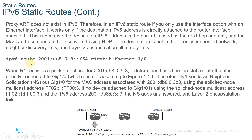Proxy ARP does not exist in IPv6. Therefore, in an IPv6 static route, if you only use the interface option with an Ethernet interface, it works only if the destination IPv6 address is directly attached to the specified router interface, because the destination IPv6 address in the packet is used as the next-hop address and its MAC address must be discovered via NDP. If the destination is not in the directly connected network, neighbor discovery fails and layer 2 encapsulation ultimately fails. For example, if R1 has a static route to 2001:DB8:0:3::/64 via Gig 1/0, it sends a neighbor solicitation out G1/0 for the MAC address using the solicited-node multicast address FF02::1:FF00:3.